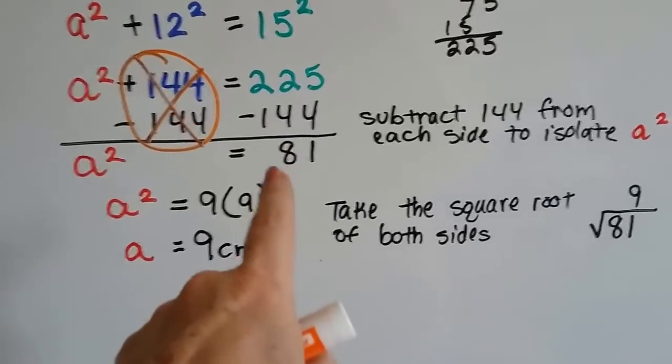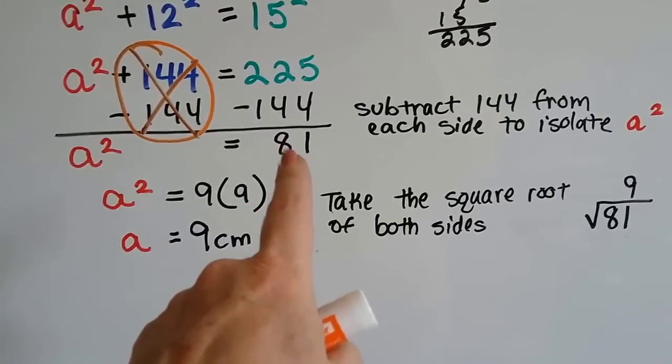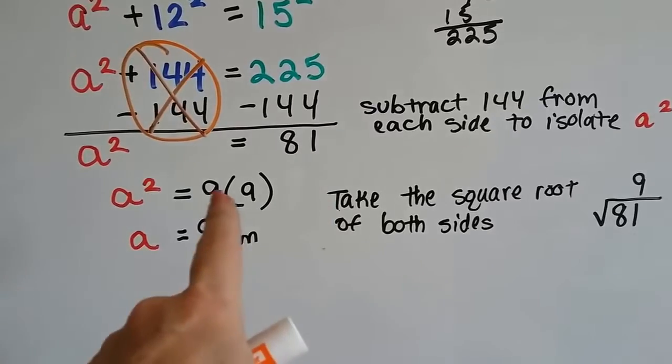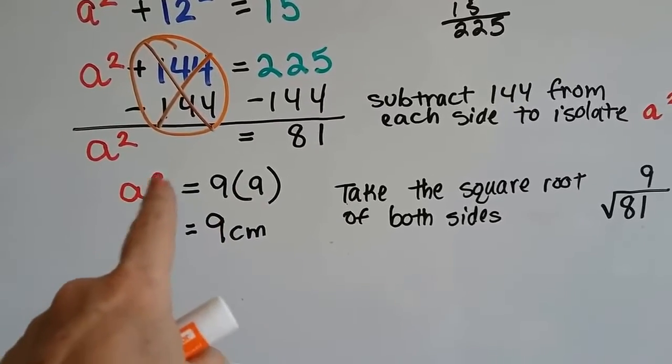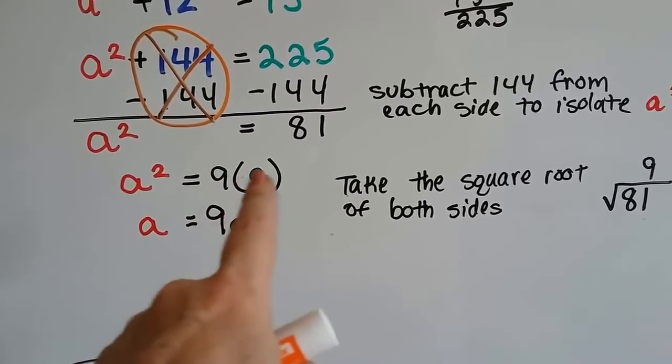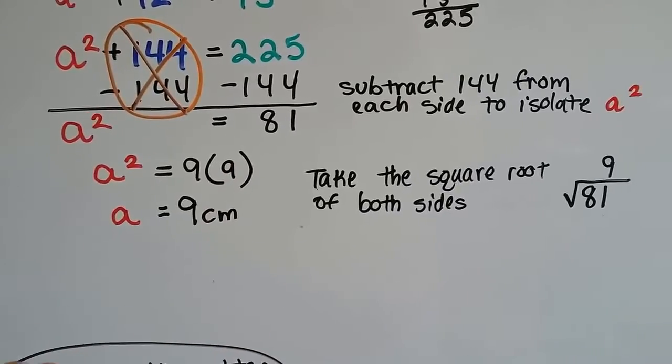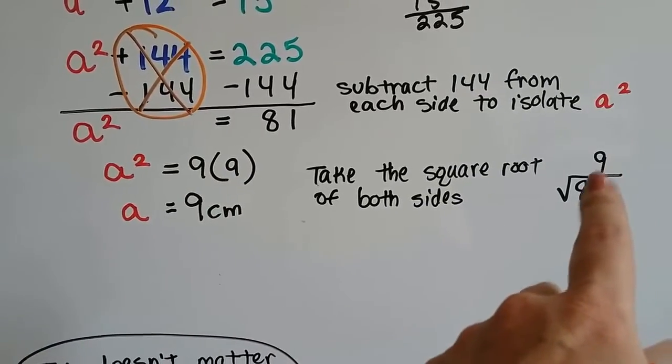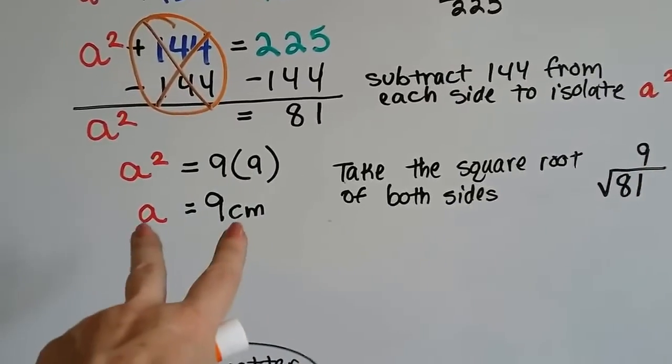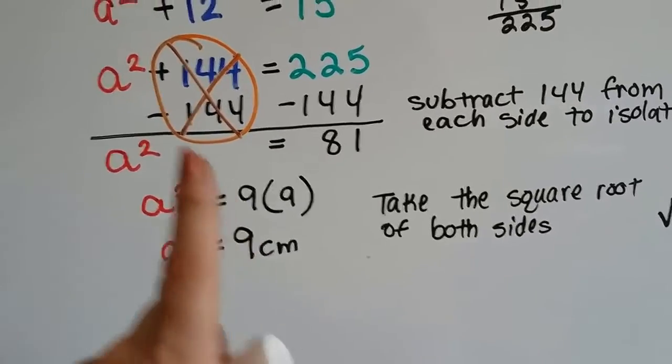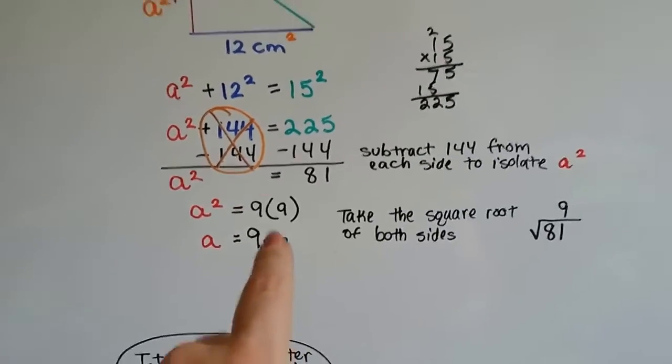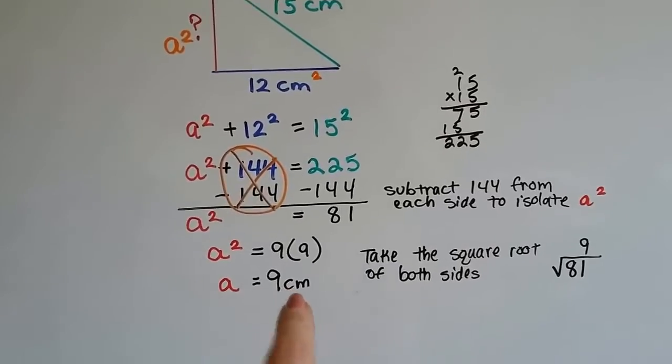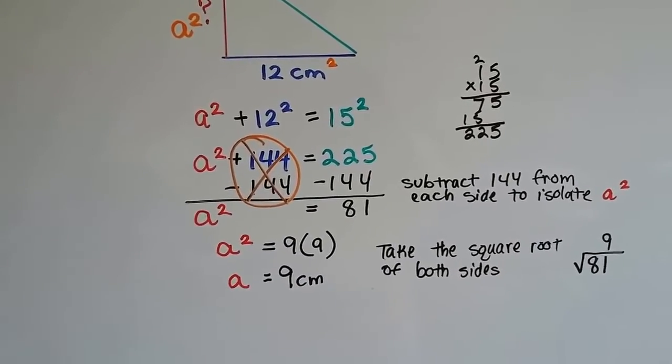What is the square root of 81? What times what equals 81? 9 times 9. So a² is equal to 9 times 9. We take the square root of both sides. The square root of 81 is 9. We know that a equals 9. But it's not just 9 – we need to write centimeters. We need to label it. So a = 9 centimeters.